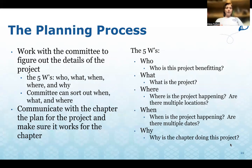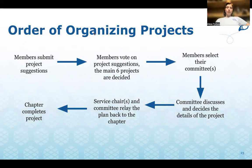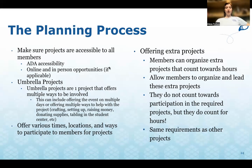Work with the committee to figure out the five W's of the project: who is this project benefiting, what is the project, where is it happening (are there multiple locations), when is it happening (are there multiple dates), and why is the chapter doing this project. Communicate the plan to the chapter and make sure it works before the project is officially finalized. Make sure all projects are accessible to all members, following ADA accessibility laws, and offer online and in-person opportunities if applicable.